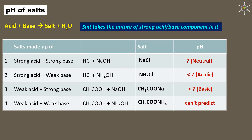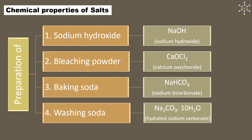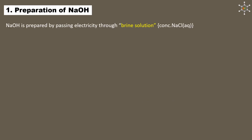Under the chemical properties of salts, we will discuss the preparation of sodium hydroxide (NaOH), bleaching powder (calcium oxychloride, CaOCl2), baking soda (sodium bicarbonate, NaHCO3), and washing soda (hydrated sodium carbonate, Na2CO3·10H2O). Sodium hydroxide is prepared by passing electric current through brine solution — a highly concentrated solution of sodium chloride in water.